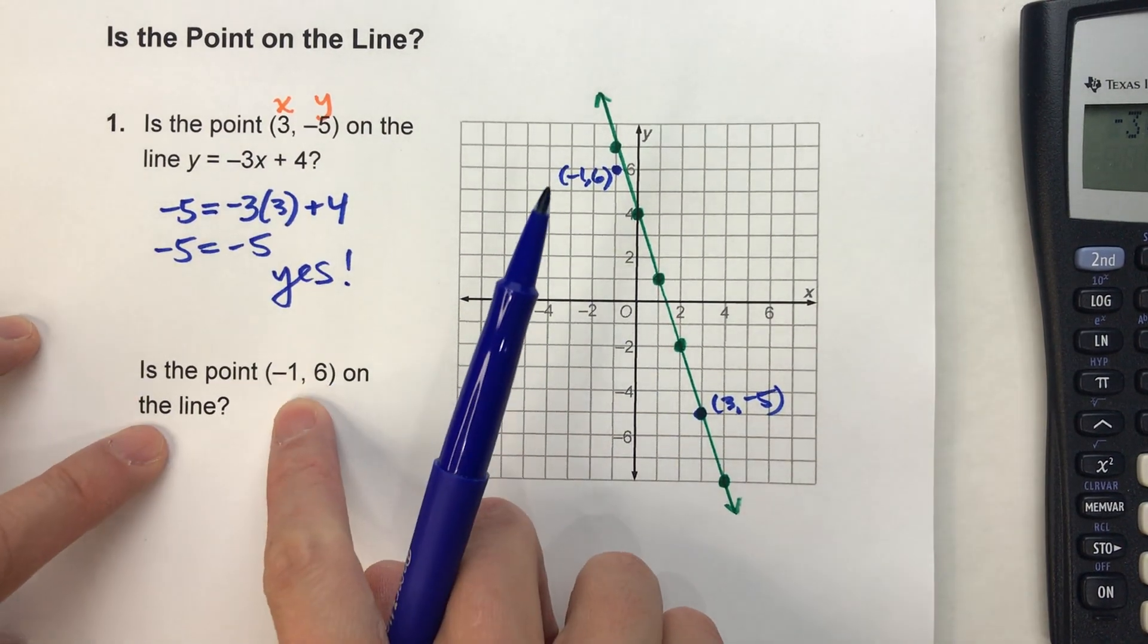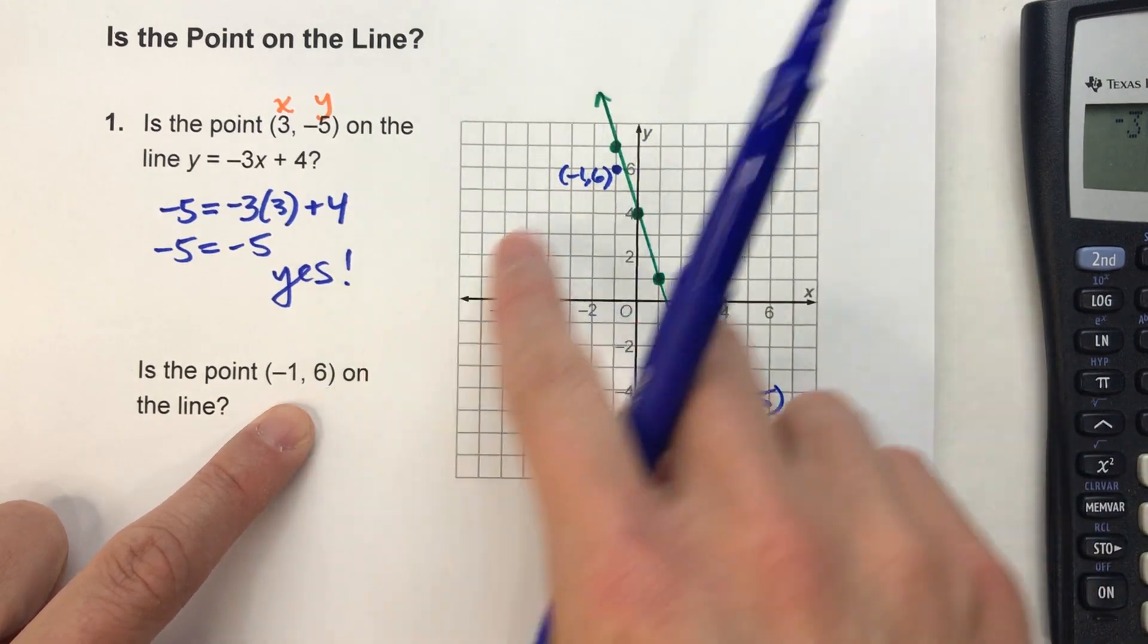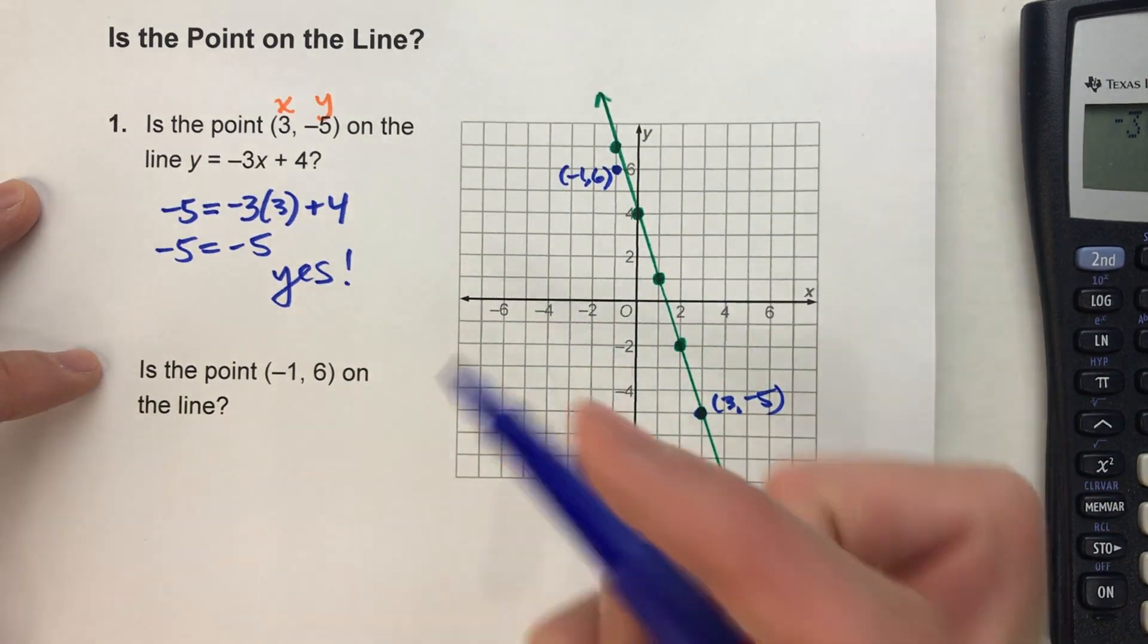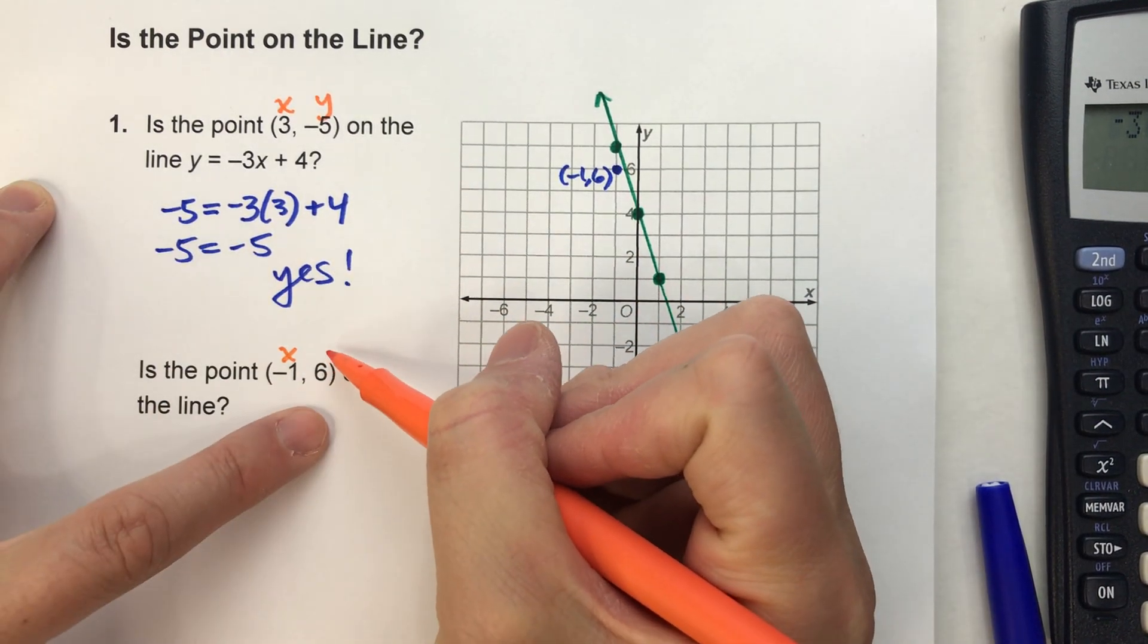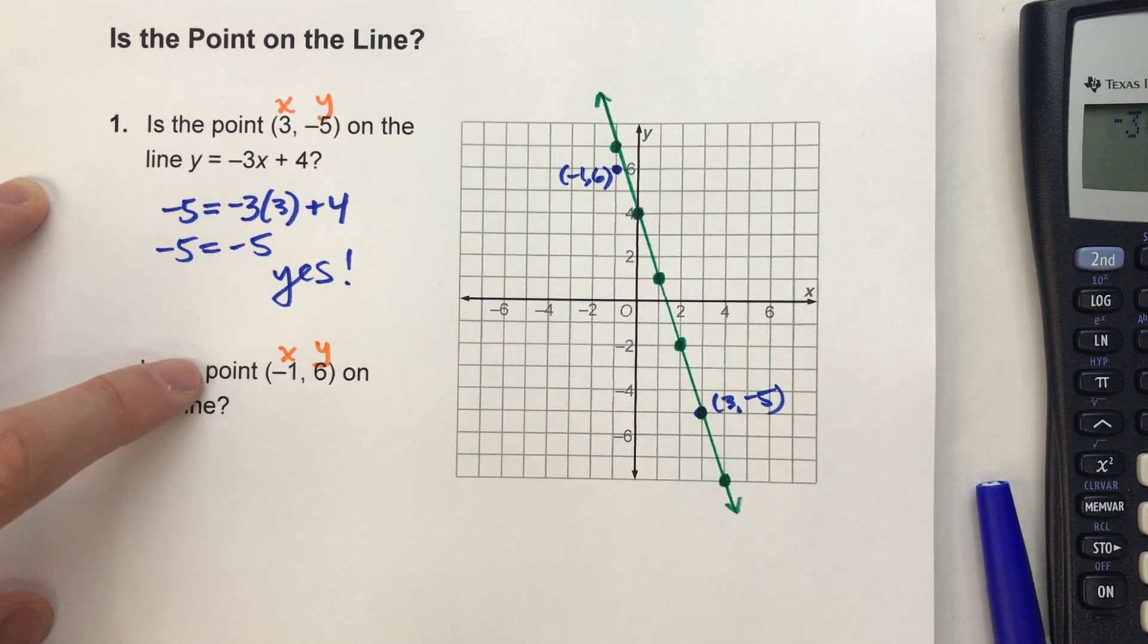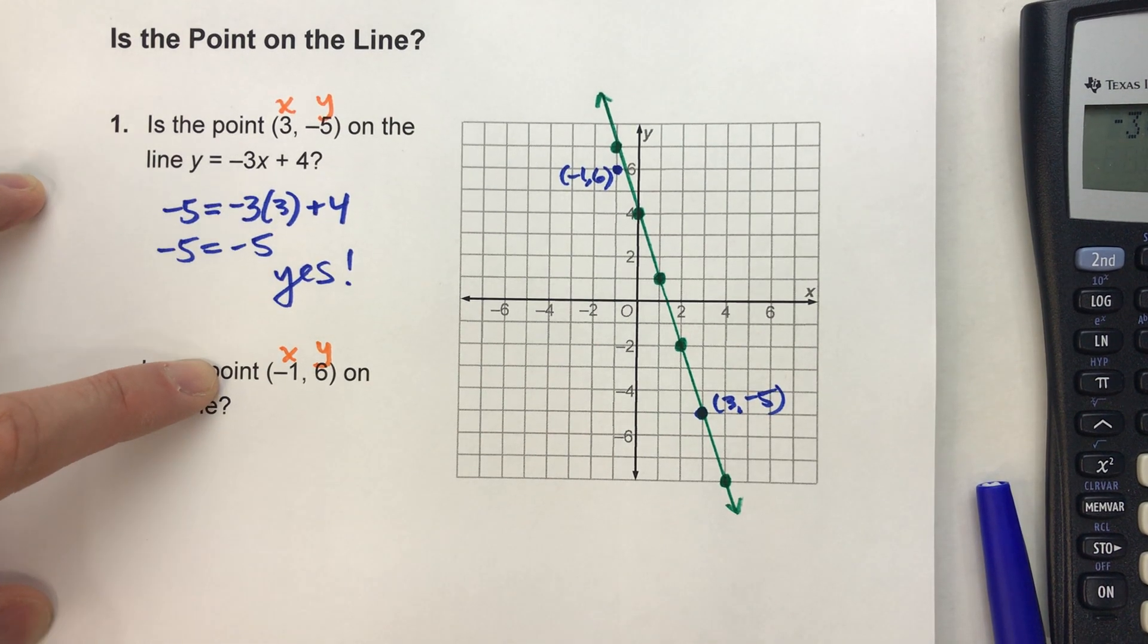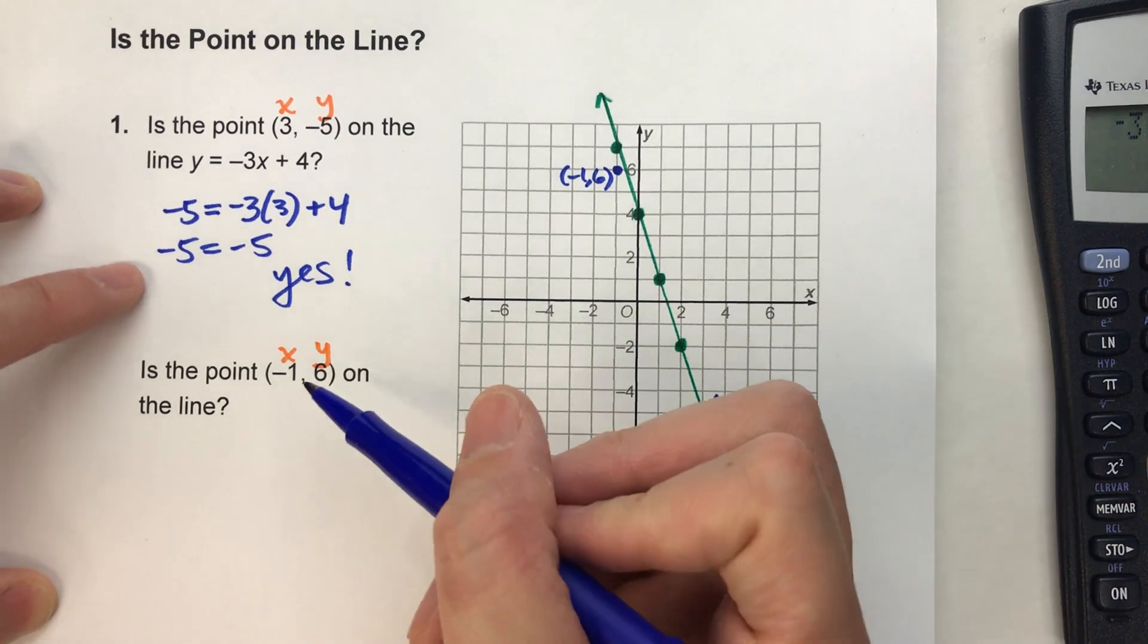Let's do it again, but with this point. And remember, we already know that this one isn't on the line, but I want to show you what it looks like. Alright, so again, -1 is my x-coordinate, and 6 is my y-coordinate, because when we have the coordinates of a point, that first one is x, the second one is y. So let's plug them in.